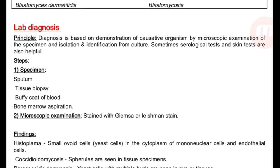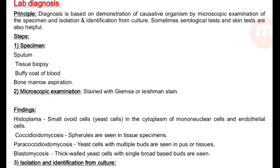Among systemic fungal agents, the important one is histoplasmosis. Laboratory diagnosis of mycoses: specimen is sputum, tissue biopsy, buffy coat of blood, or bone marrow aspiration. Microscopic examination: stained with Giemsa stain or Leishman stain. Findings — histoplasmosis: small oval yeast cells inside the cytoplasm of mononuclear cells and endothelial cells. Coccidioidomycosis: spherules are seen in tissue specimen. Histopathological test also shows spherules.